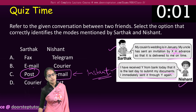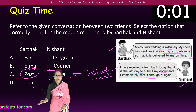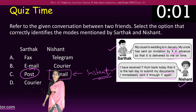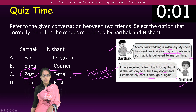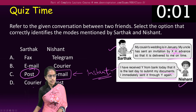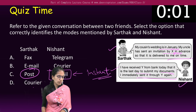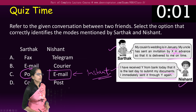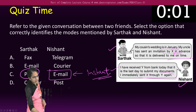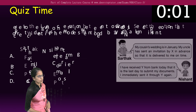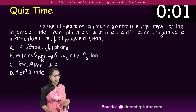He emailed it, and the person would get it today itself. Email is instantaneous, and therefore email would be the right option for Nishan. So the correct options here would be post and email. Let's do some other questions.